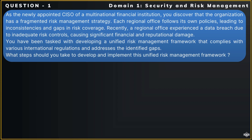As the newly appointed CISO of a multinational financial institution, you discover that the organization has a fragmented risk management strategy. Each regional office follows its own policies, leading to inconsistencies and gaps in risk coverage. Recently, a regional office experienced a data breach due to inadequate risk controls, causing significant financial and reputational damage. You have been tasked with developing a unified risk management framework that complies with various international regulations and addresses the identified gaps. What steps should you take to develop and implement this unified risk management framework?